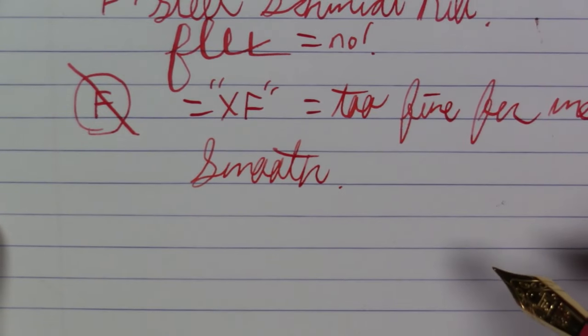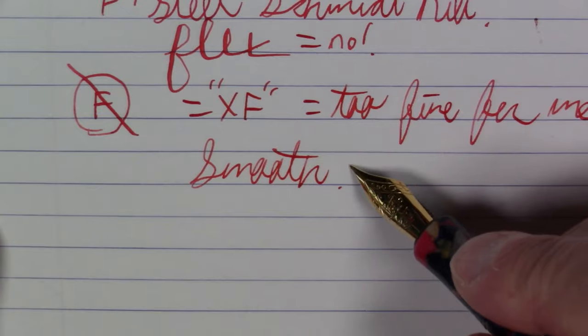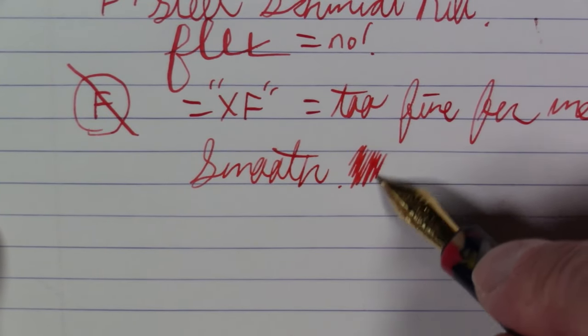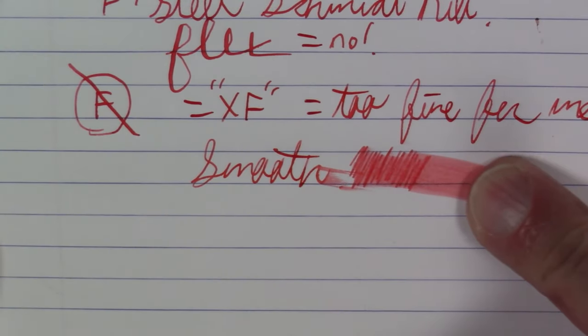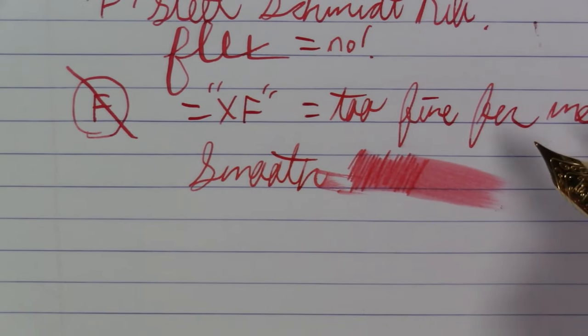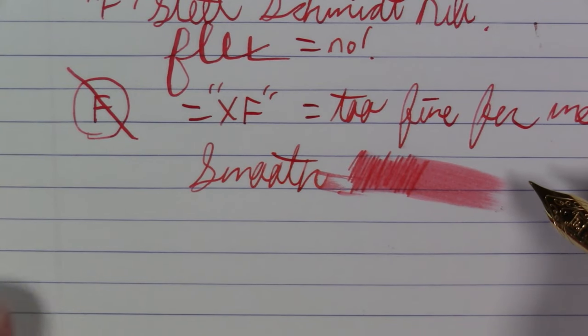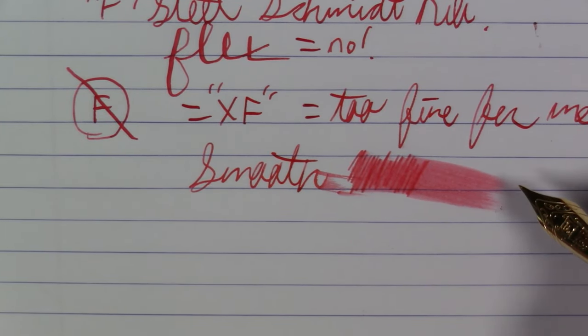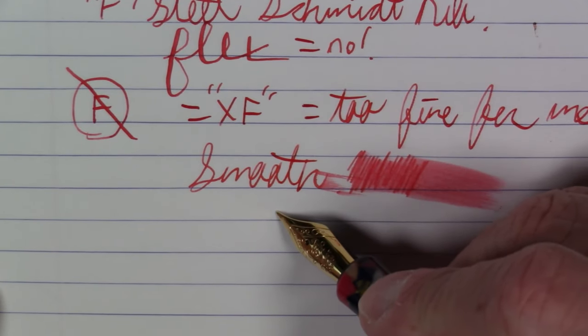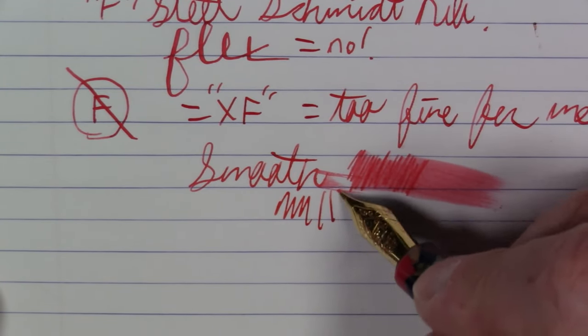So one of my biggest gripes on extra fine nibs is typically their lack of smoothness. I'd say this pen is average in terms of wetness for an extra fine. Certainly not dry. Certainly not what I would call a wet writing pen. I think it's straight down the middle. Writes pretty decently.